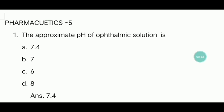Question 1: What is the approximate pH of ophthalmic solution? The approximate pH is 7.4. Answer is 7.4.